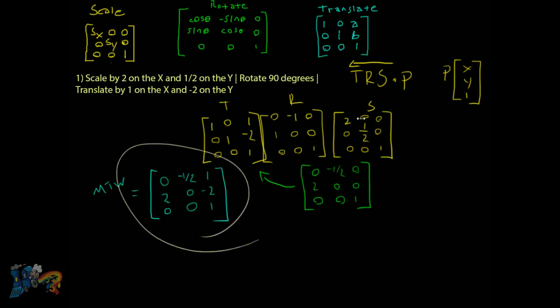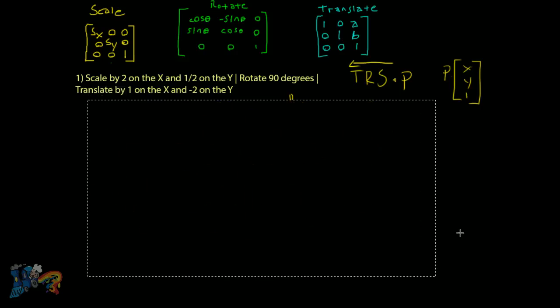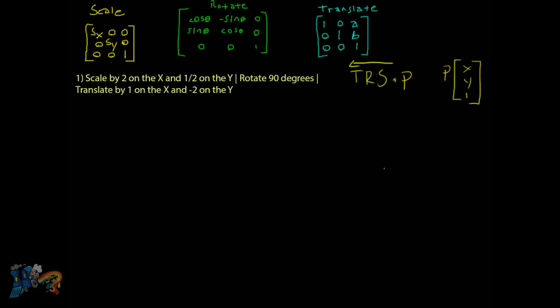That's problem one done. Moving on to problem two — we're scaling by 3 on x and 3 on y, so we fill in those values in the scale matrix.